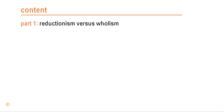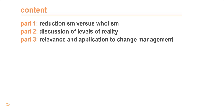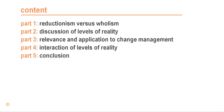Part one deals with reductionism versus wholism, the two world views that philosophy of science needs to concern itself with. Part two discusses different levels of reality, namely physical reality versus different kinds of conceptual reality as well as consciousness reality. Part three deals with the relevance and application of the different levels of reality to change management. Part four discusses the interaction of levels of reality and part five gives some concluding remarks.